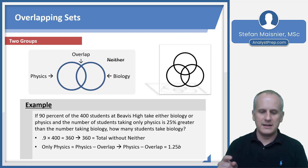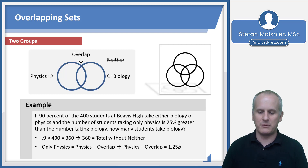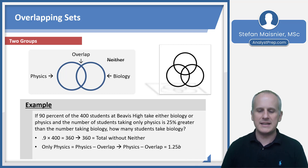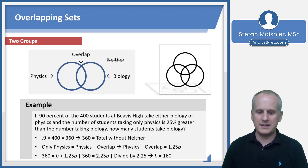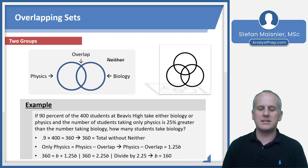We know that the number of students taking only physics — so physics minus the overlap — is 25% greater than the number taking biology, which we can articulate as B. So physics minus the overlap equals 1.25B. Since our sum of 360 is equal to biology plus physics minus the overlap, we know that 360 equals B plus 1.25B.